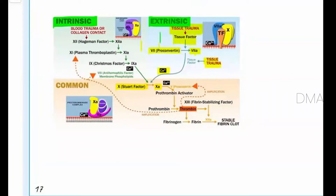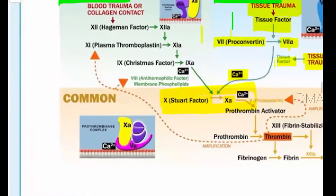The extrinsic pathway is very, very short. The damaged tissue activates pro-convertin into its activated form, and this activated Factor 7, along with the tissue factor and calcium, enters the common final pathway, making Factor 10 become Factor 10A.